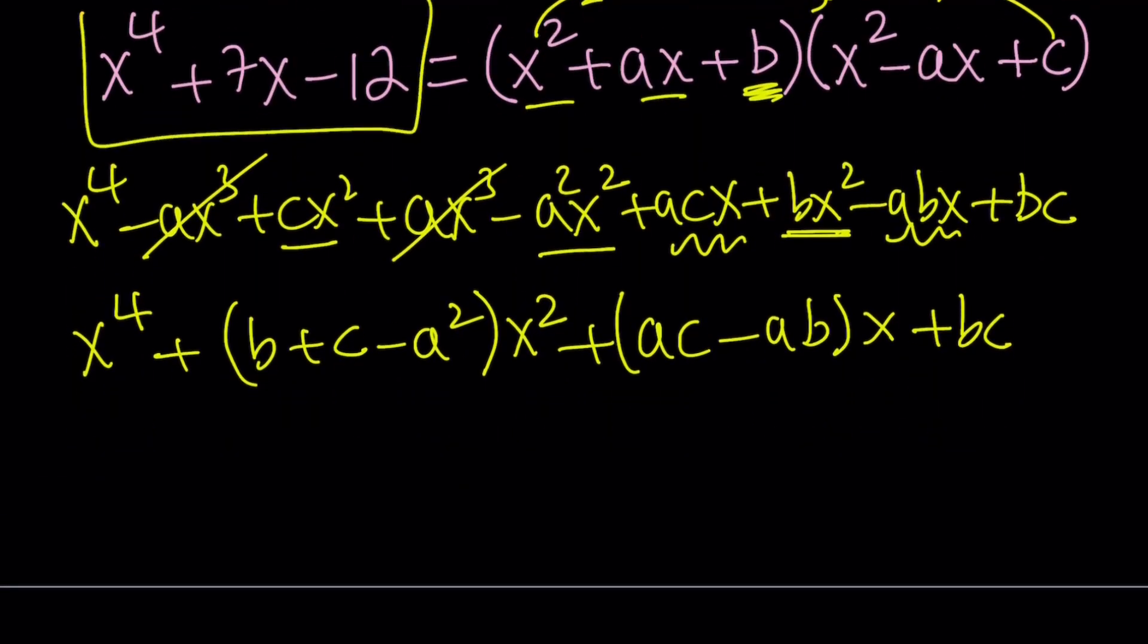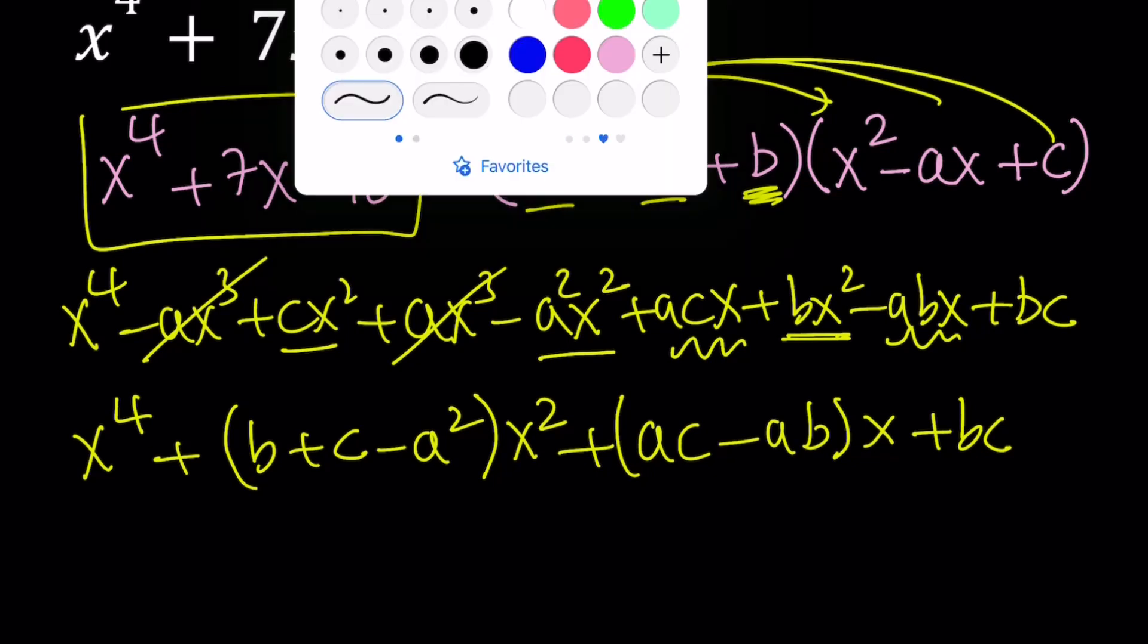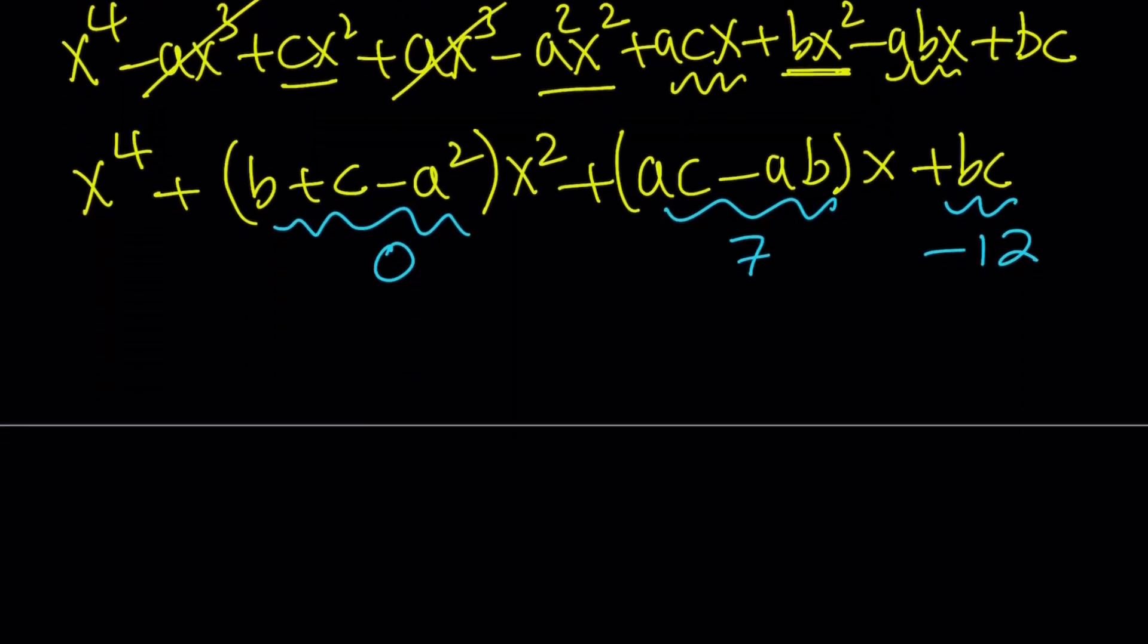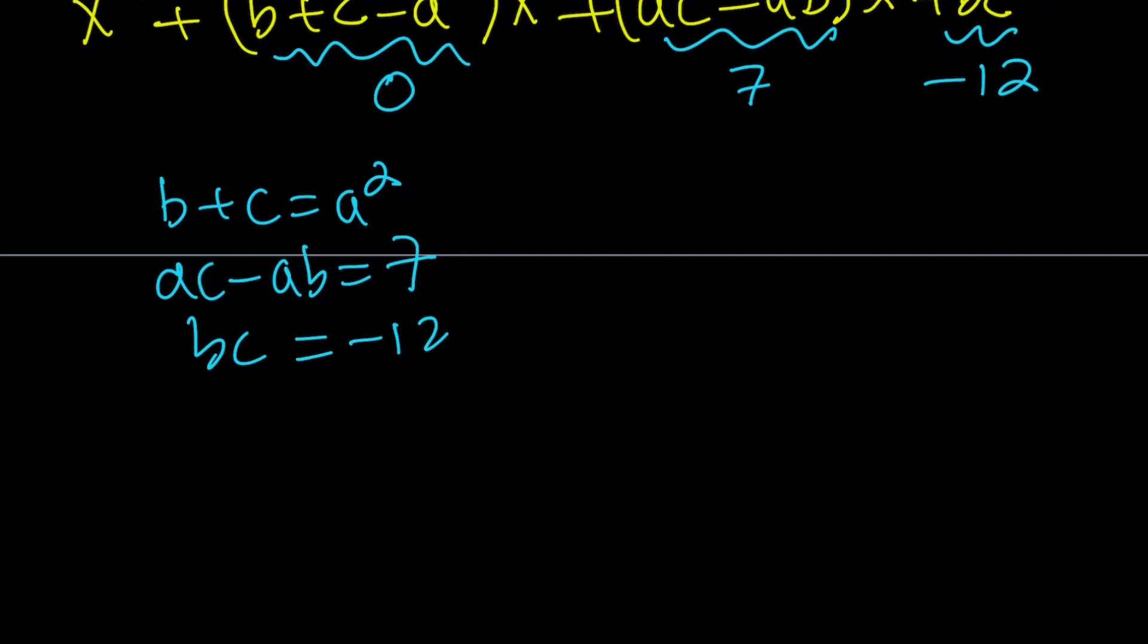We know it's equal to this, therefore I can just write down what the coefficients are. We don't have any x squared here, so this is going to be 0. The coefficient of x in our expression is 7, and this is going to be negative 12. At this point you can do guess and check if you want, but I'm actually going to solve this as a system, so it's not completely random.